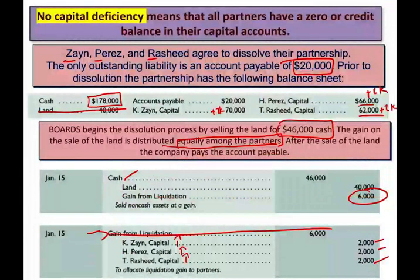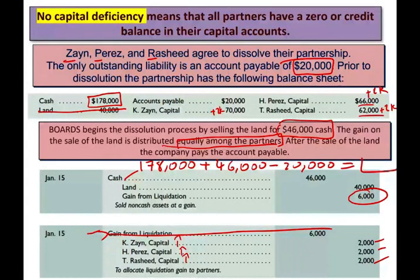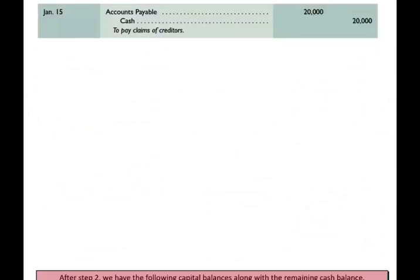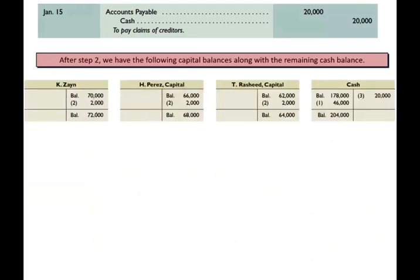The next logical step is to pay off the liability. We only have one liability — accounts payable — so we debit accounts payable and credit cash for $20,000. It's important to keep track of the cash balance: we started with $178,000, sold the land for $46,000, so we have more cash, and then we pay off the liability of $20,000. After step two, our capital balances are: Zane $72,000 (started at $70,000 plus $2,000), Perez $68,000 (started at $66,000 plus $2,000), Rashid $64,000 (started at $62,000 plus $2,000), and cash balance is $204,000 minus $20,000 = $204,000 — wait, cash is $178,000 + $46,000 − $20,000 = $204,000.